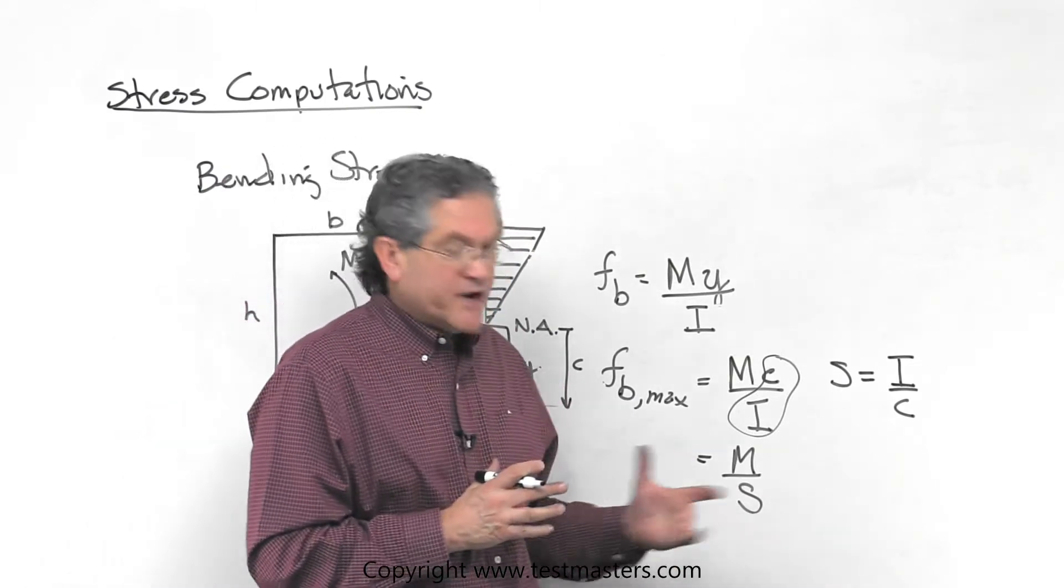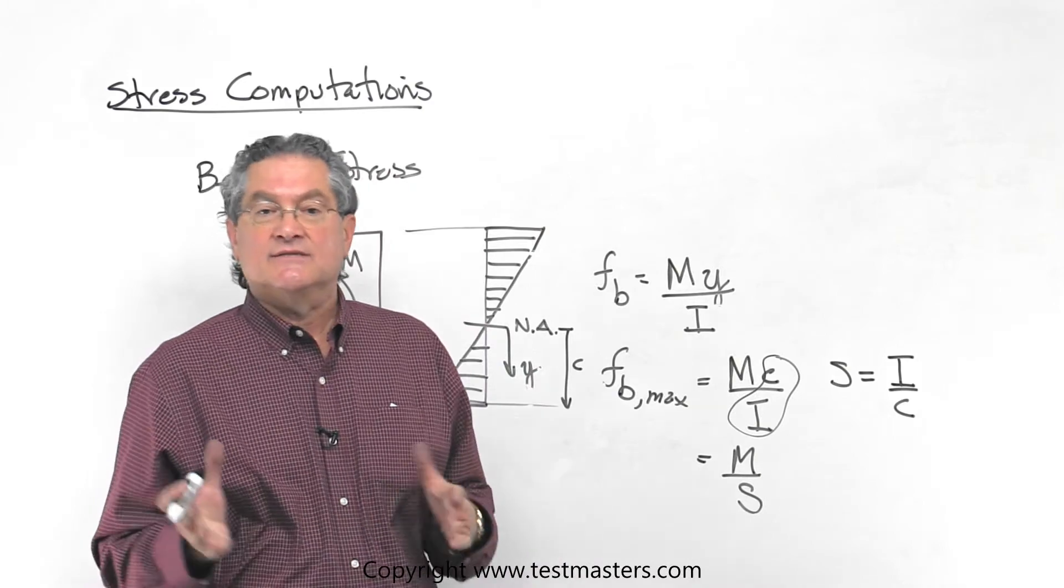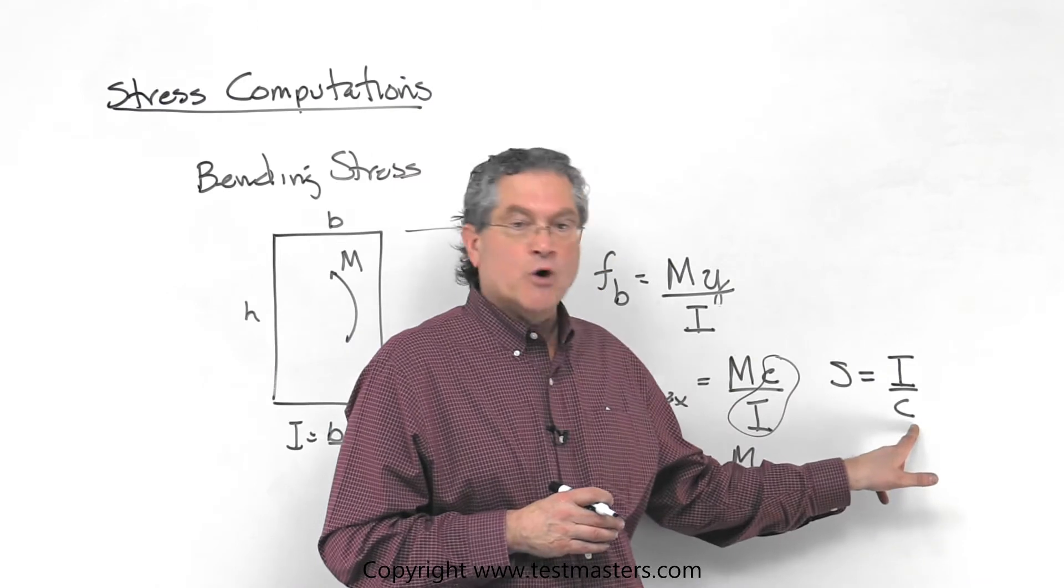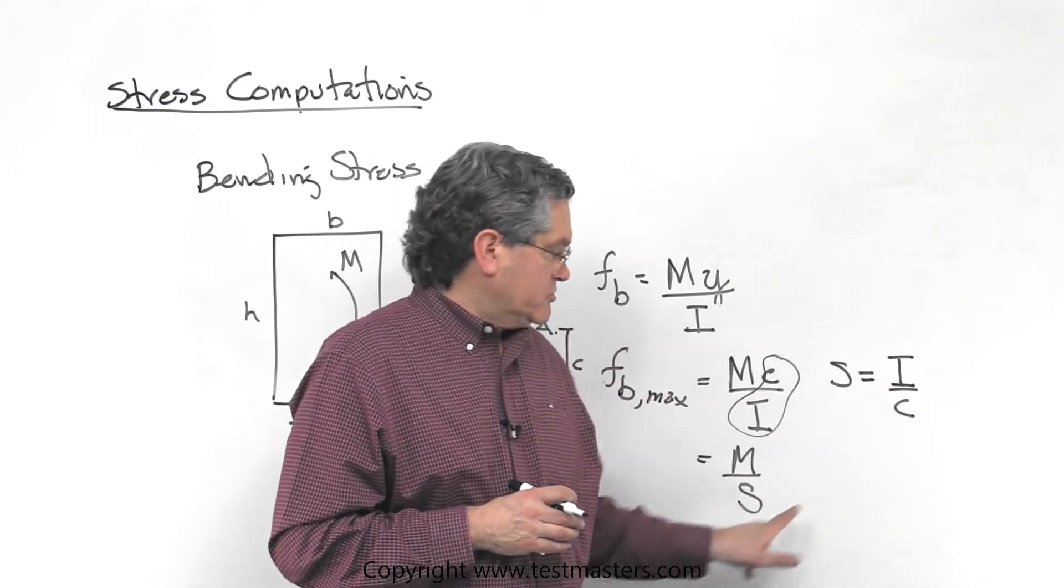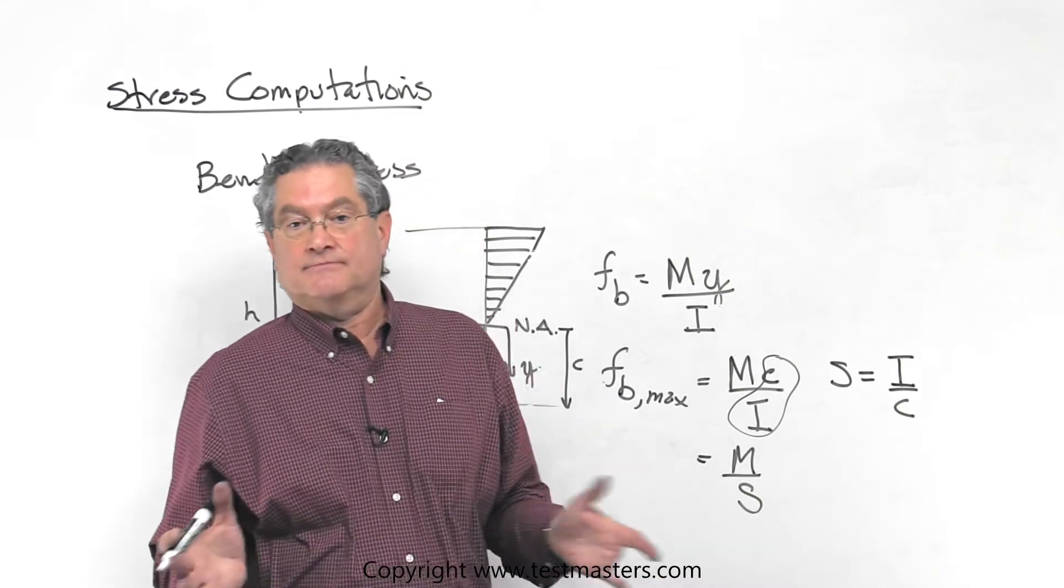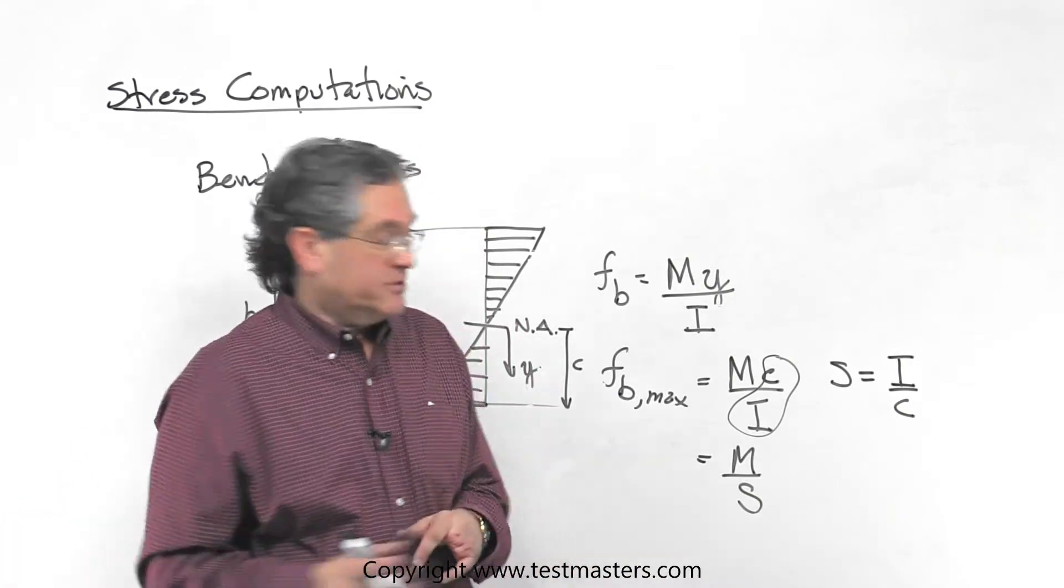And the reason why we do this is because in design, when you're trying to select a section, you don't know what I is, you don't know what c is, but that ratio is unique to the cross section. So what we do is solve for an S, and then it's only one variable that we're looking for.